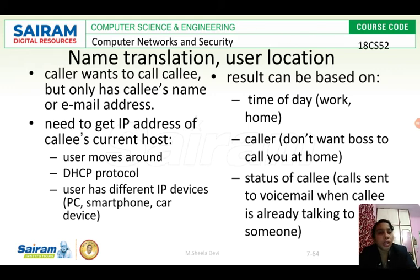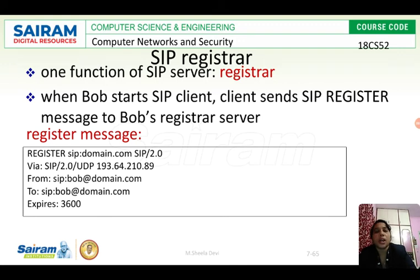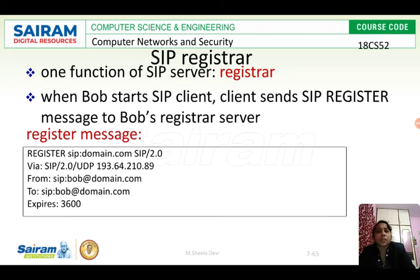To have voice communication, we need the IP address of the destination. Since users move around and use DHCP, they may have different IP addresses at different times, or use different IP devices. The result can depend on the time of day or the caller's status. This is where the SIP Register comes in — its function is to convert the email address or URL into a current IP address.